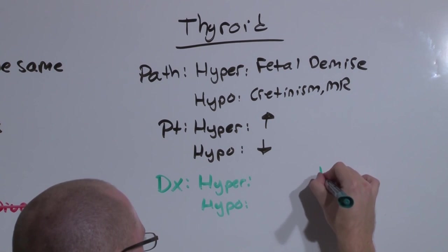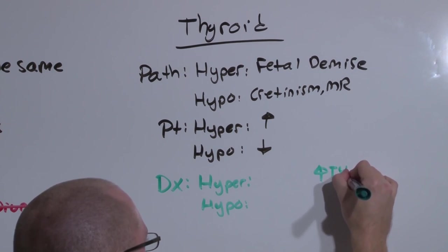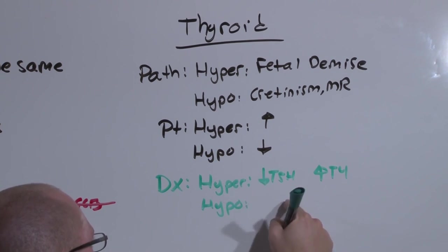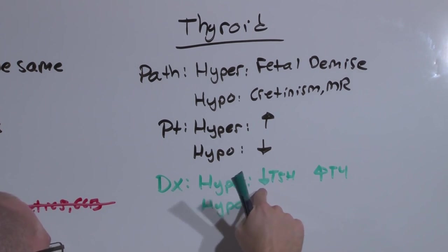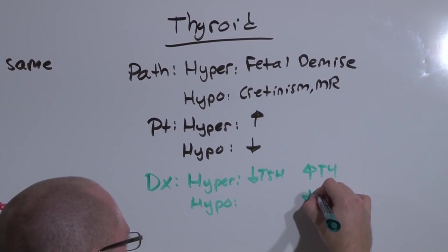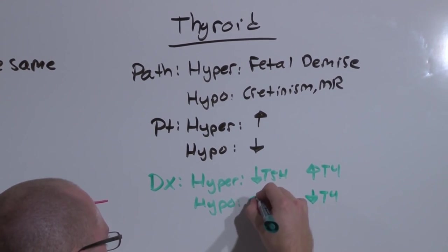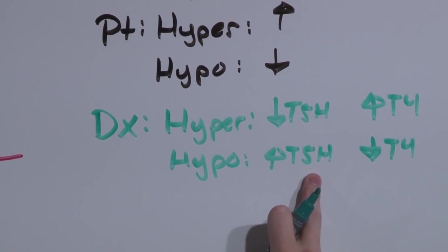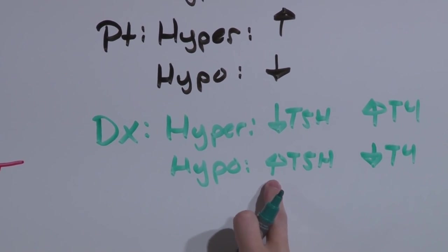In hyperthyroidism, you have an excess of T4. T4 then will feed back and turn off TSH. So you screen for hyperthyroidism with a TSH. In hyperthyroid, the TSH is low. In hypothyroidism, the T4 is low, and so TSH is uninhibited. You screen for hypothyroidism with a TSH. In hypothyroidism, the TSH is elevated.